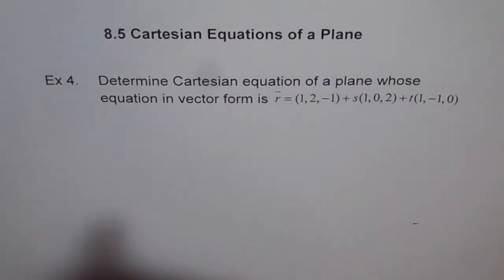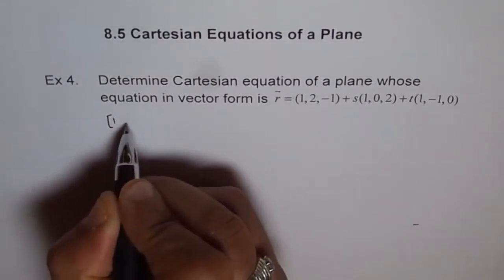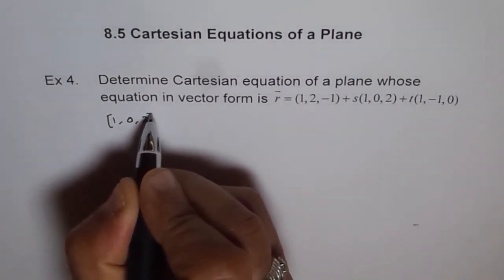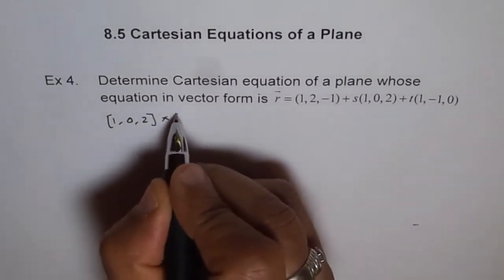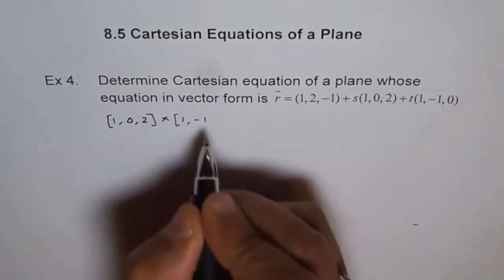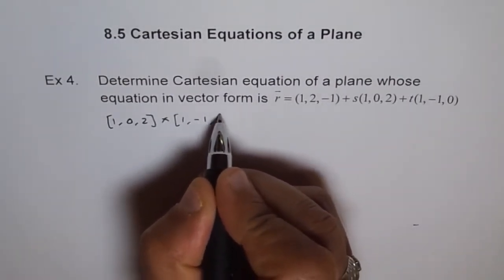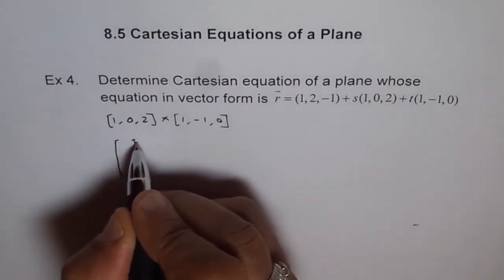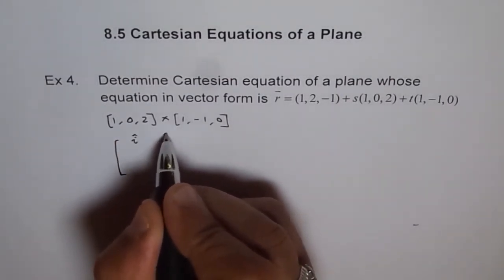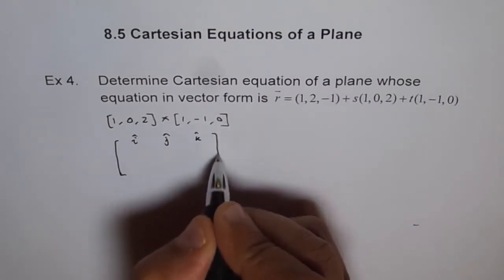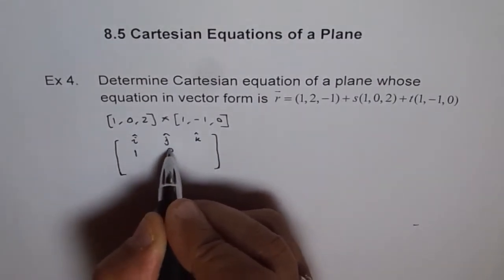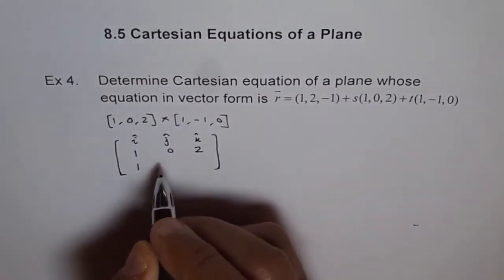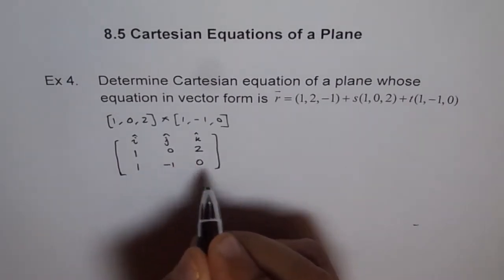So, let's do cross product of 1, 0, 2, and 1, minus 1, 0. Let's use the vector method, the matrix method. I, J, and K, and we have 1, 0, 2, 1, minus 1, 0.